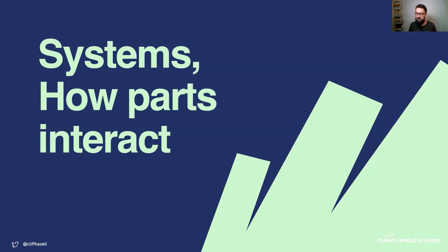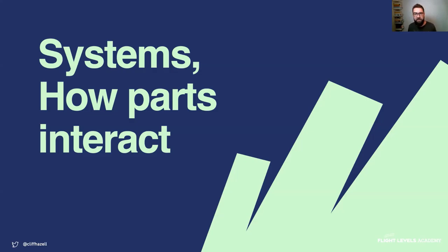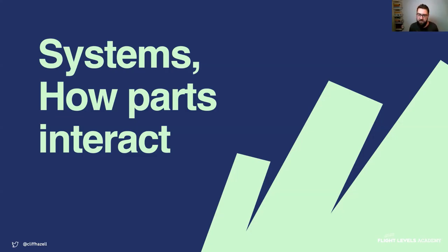Now let's talk about systems — the third lens. How do the parts interact? We know a little bit about the humans, we can evaluate what's working and what's not, but we need to look at how the parts are working together because ultimately that's what affects our ability to perform as a company.